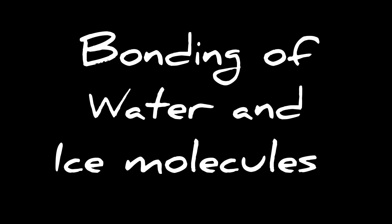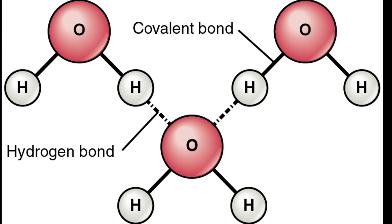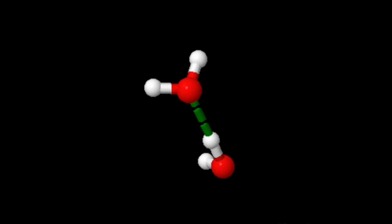Regarding the bonding of water and ice molecules: as you know, water has two hydrogen atoms and one oxygen atom. Two molecules of water can form a hydrogen bond between them. The oxygen of one water molecule has two lone pairs of electrons, each of which can form a hydrogen bond with a hydrogen on two other water molecules.